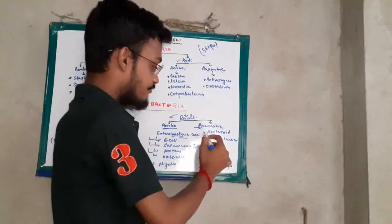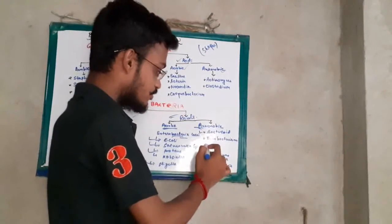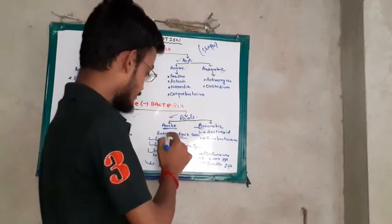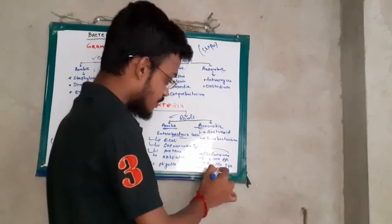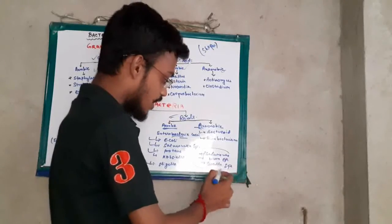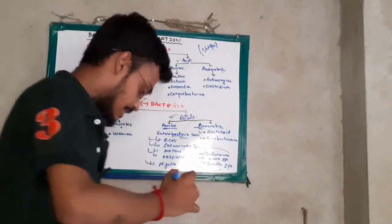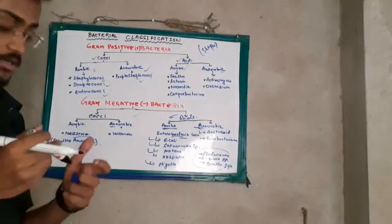In anaerobic we have Bacteroides, Fusobacterium. In aerobic there are some special species which is having Pseudomonas, Vibrio species, etc.